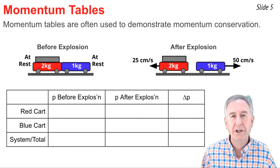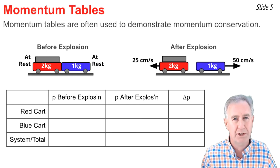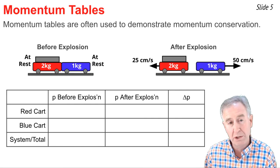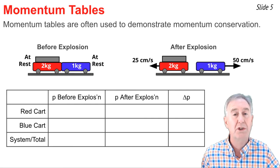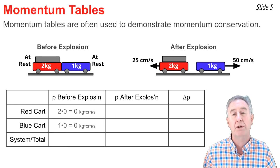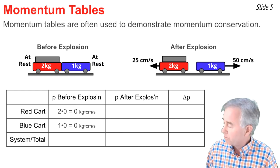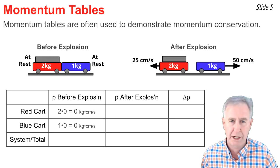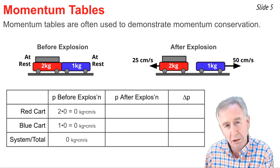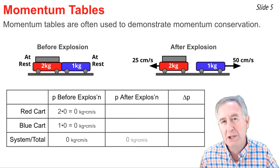I like to use momentum tables to keep track of momentum and to show the law of momentum conservation. For the red cart and blue cart explosion: before the explosion, both are at rest, so each has zero momentum, giving the system a total of zero. After the explosion, there should still be zero units of momentum in the system.